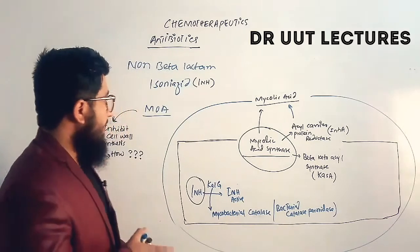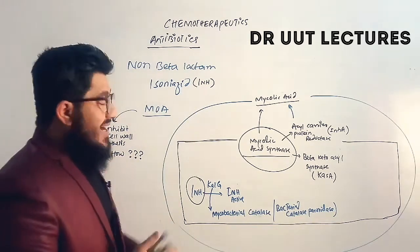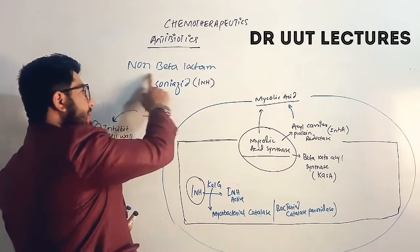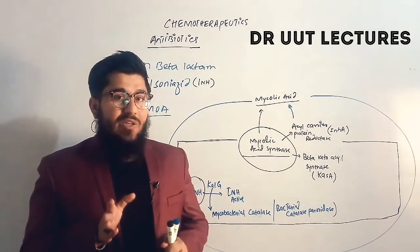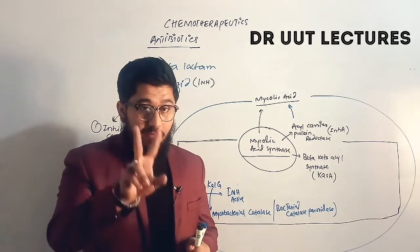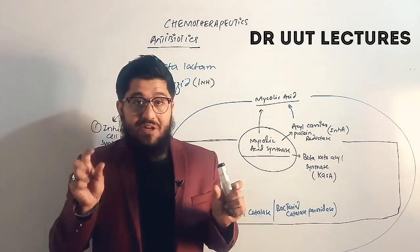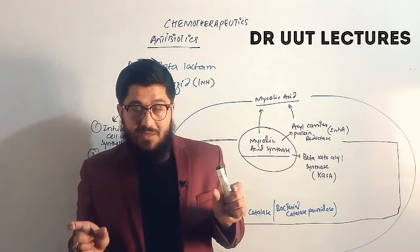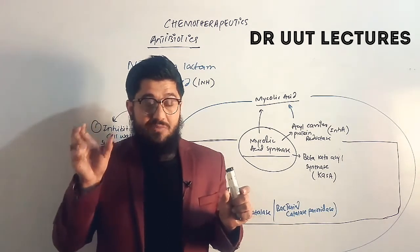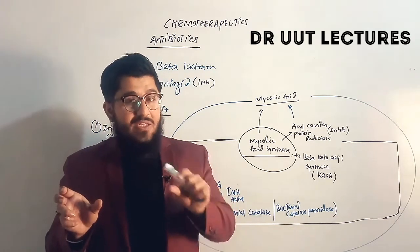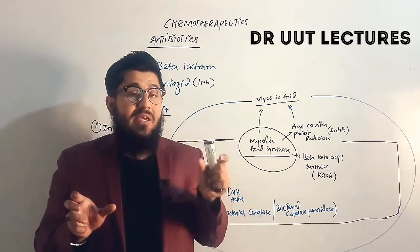In this lecture we are going to discuss the mechanism of action of isoniazid, which is one of the non-beta-lactams. We have two types of cell wall inhibitor antibiotics: number one, beta-lactams, and number two, non-beta-lactams. Those which have a beta-lactam ring are placed in the beta-lactams antibiotics, like penicillin, cephalosporins, carbapenems, and monobactams. Isoniazid is placed in the non-beta-lactams class.